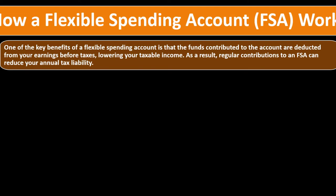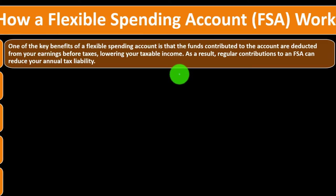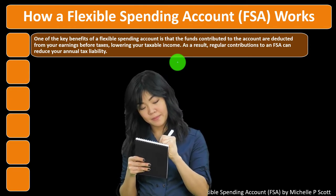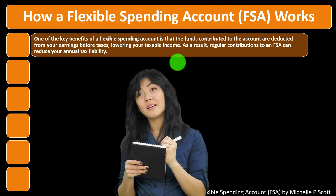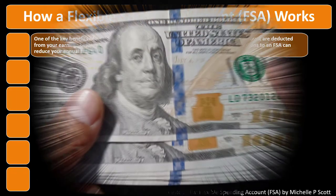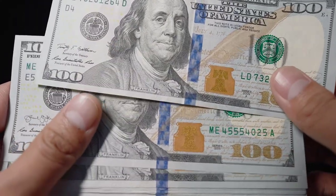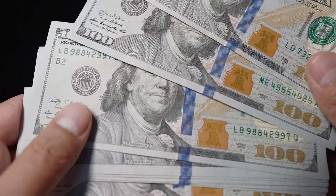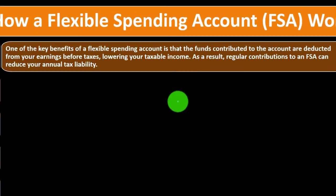How does a flexible spending account work? One of the key benefits is that the funds contributed are deducted from your earnings before taxes, lowering your taxable income. When we think about income taxes, everything is in reverse — income is generally good, but for tax purposes more taxable income means higher taxes. Benefits programs like FSAs allow income given to you that's not taxable, which is the advantage. As a result, regular contributions to an FSA can reduce your annual tax liability.